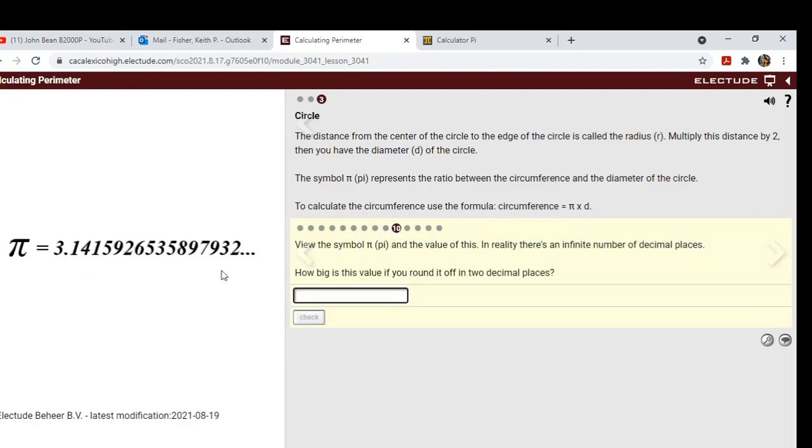And here we see pi. View the symbol pi and the value of this. In reality there is an infinite number of decimal places. How big is this value if you round it off to two decimal places? So if you come here, this is one, so we're going to round. So we see that it's three point one four.